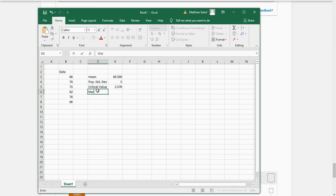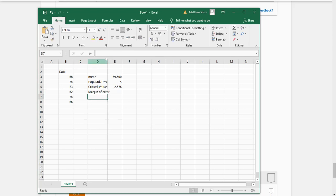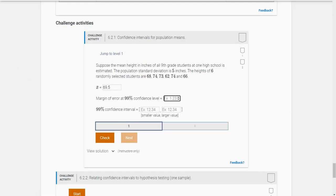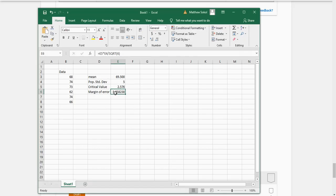Okay so the margin of error. This formula is the critical value times the standard deviation divided by the square root of the sample size, which is 6. And it looks like here it's 5.258. So they wanted to go to two decimal points, so it's going to be 5.26.